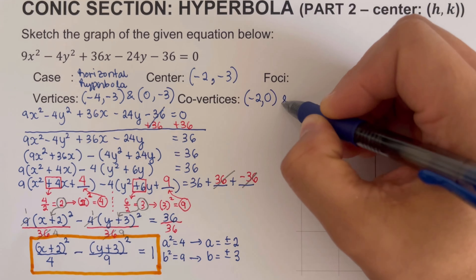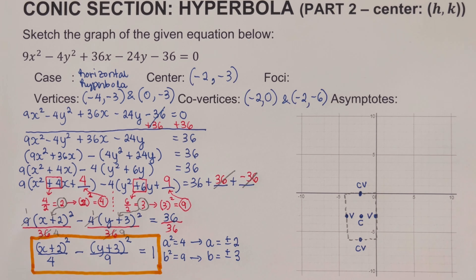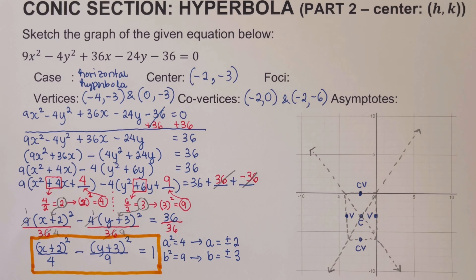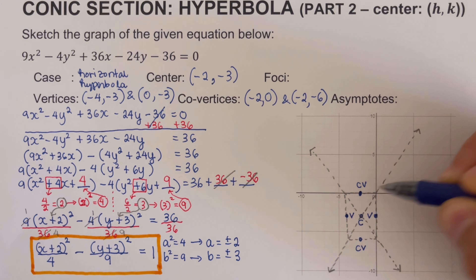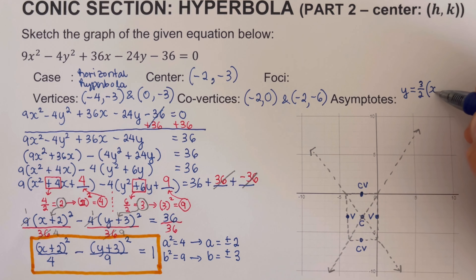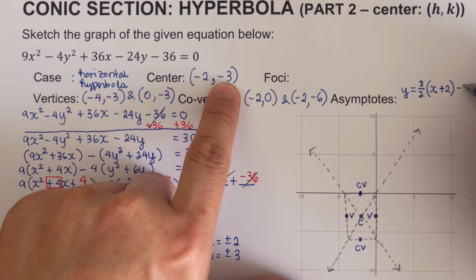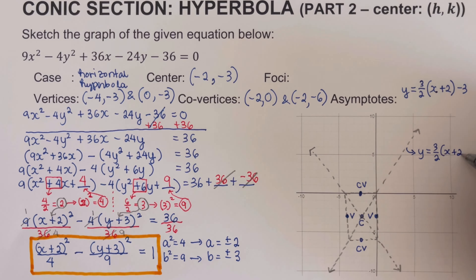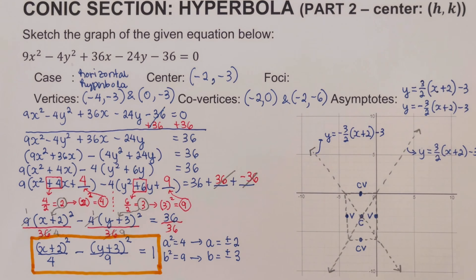We plot the two co-vertices and draw the rectangle. Then we draw the two asymptotes passing through the corners of the rectangle through the center. To find the asymptote equations, the slope is b over a, which is 3 over 2. The asymptote equation is y equals 3 over 2 times (x minus negative 2), minus 3 — or y equals 3 over 2 times (x plus 2) minus 3. The other asymptote has a negative slope. From here we can sketch the hyperbola.